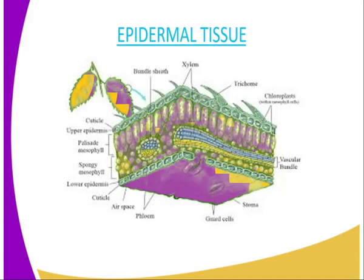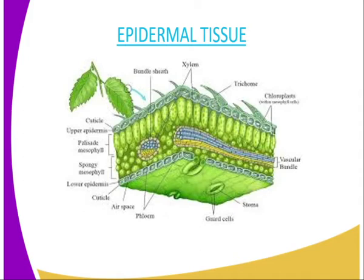Let us begin. Our first tissue on plants, we are going to deal with the epidermal tissue. As you can see from our diagram, we have this diagrammatic representation of the epidermal tissue. The epidermal tissue is found on the leaf, and as you are aware, we have both the upper and the lower epidermis. But on our diagram, this is just a diagrammatic representation of the epidermis.